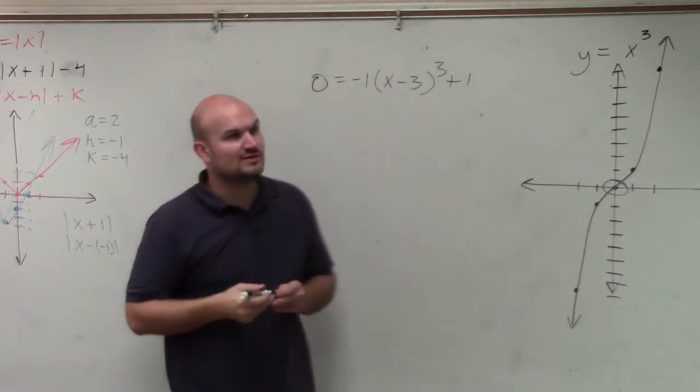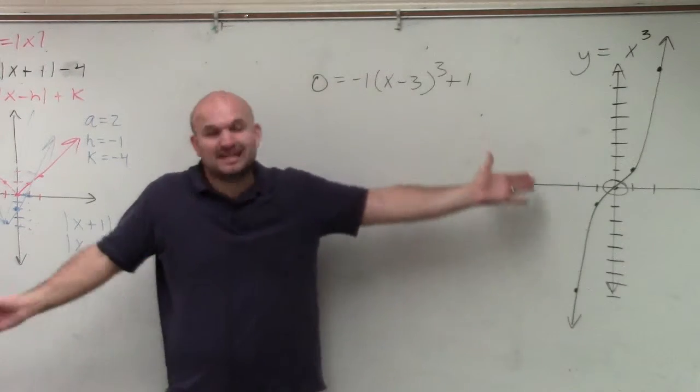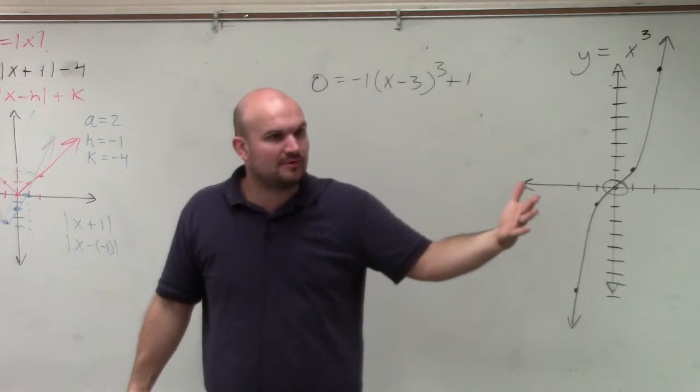OK, good. So we're going to find the zeros. Now, previously we've done factoring, or even today we had to do synthetic division or so forth. But we always wanted to do those techniques when we had more than one variable, correct?